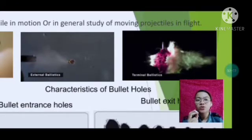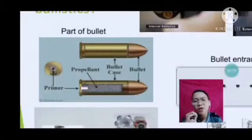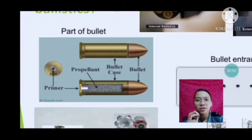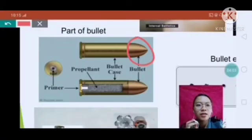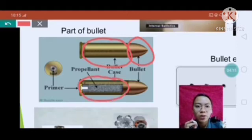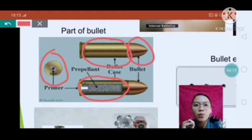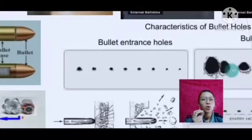What is a bullet? A bullet is the projectile fired from the gun. The parts of a bullet include: the bullet itself (the projectile), the cartridge or bullet case, the propellant which is the gunpowder, and the primer. Those are the parts of a bullet.